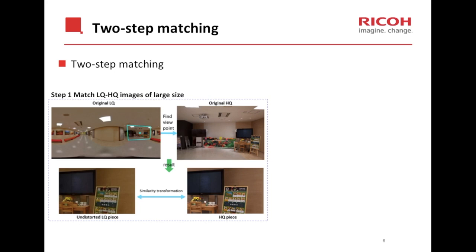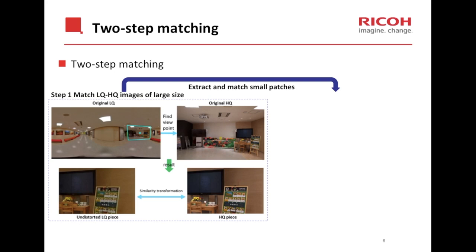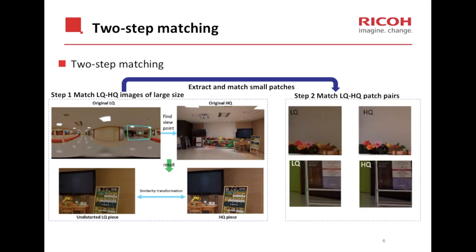The first step is to match LQ and HQ images of large size. A feature-matching method is used to find the viewpoints and get the matched positions between LQ and HQ. We use Oriented FAST and Rotated BRIEF, or ORB, as the feature descriptor to detect key points. The LQ is converted from equirectangular to perspective projection, and we fine-match LQ and HQ using similarity transformation by ORB descriptor again. In the second step, we extract and match small patch pairs using template matching and pixel mapping. Our final dataset is called the Panoramic High-End, or PanelHigh Dataset, consisting of equirectangular and high-end camera images of more than 100GB.